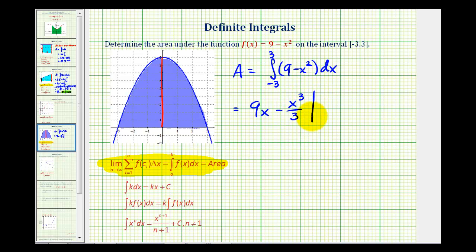And now we'll evaluate this at the upper limit of integration, which is three, and then evaluate this at x equals negative three, and then determine the difference. And that will be the value of our definite integral, which in this case will be the area of the shaded region.